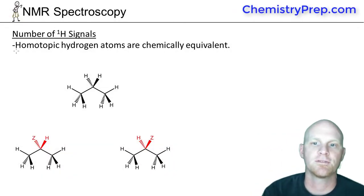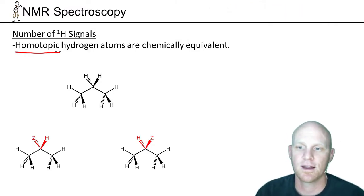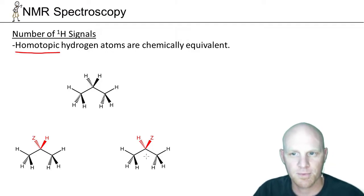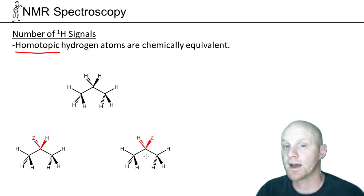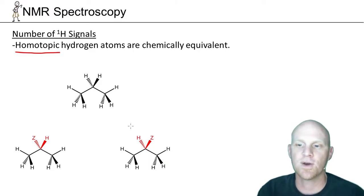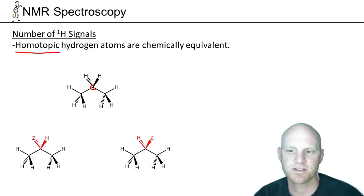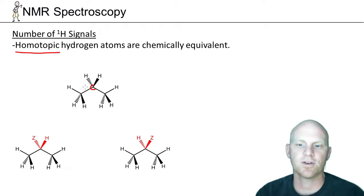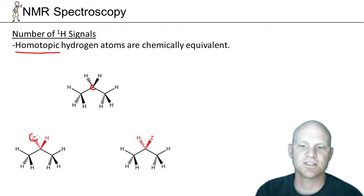Now I want to define the term homotopic. Homotopic hydrogens are chemically equivalent. You typically have to worry about this designation when you have a carbon that has two hydrogens. The procedure we use to figure that out is we take those two hydrogens and replace one of them with the letter Z.